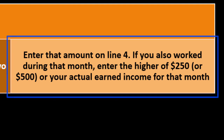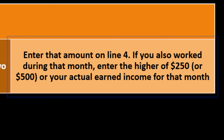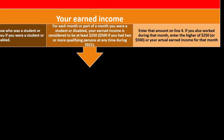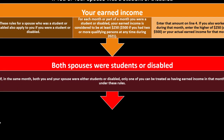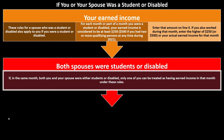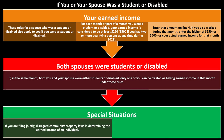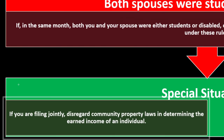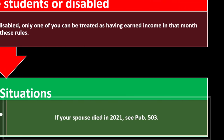If both spouses were students or disabled in the same month, only one can be treated as having earned income under these rules. Special situations: if filing jointly, disregard community property laws when determining the earned income of an individual. If your spouse died in 2021, see Publication 503 for more information.